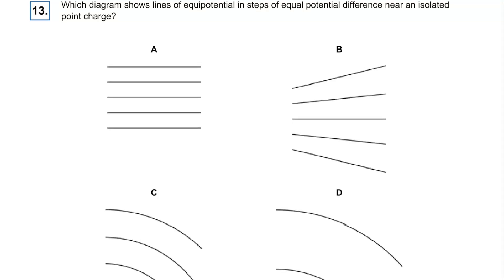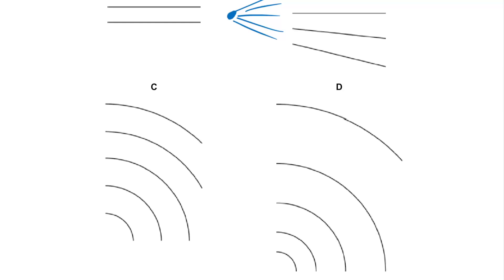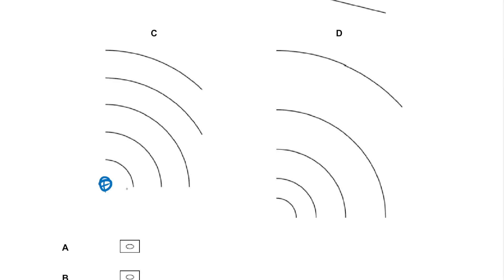Question thirteen: which shows equipotentials in equal potential difference near an isolated point charge? It can't be A — that's a uniform field. B shows what could be field lines, but we're asked for equipotentials. We know that equipotentials get further apart as you go further away because they need to tend to zero at infinity. So it can't be C; the answer is D.